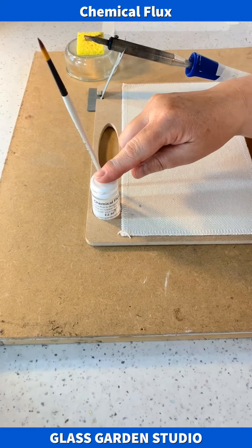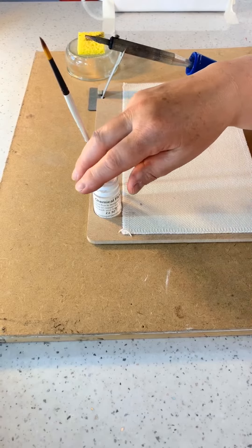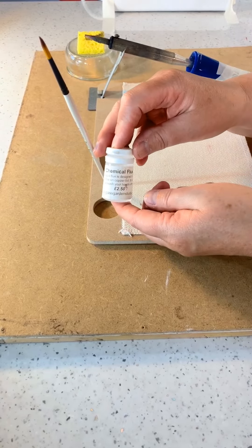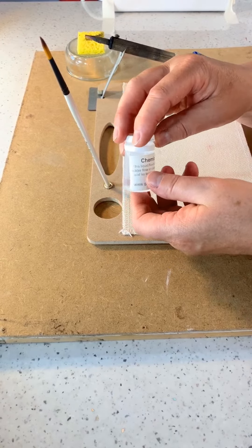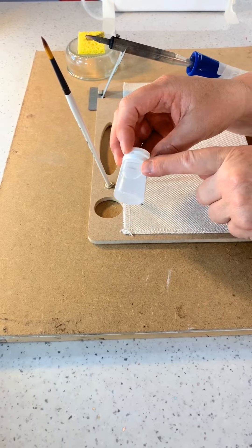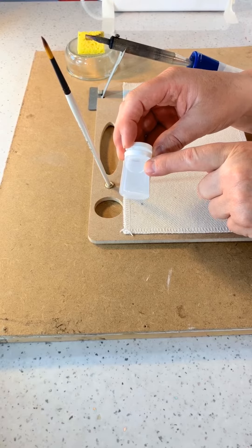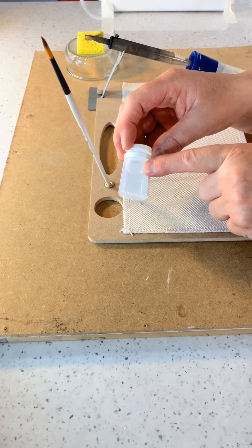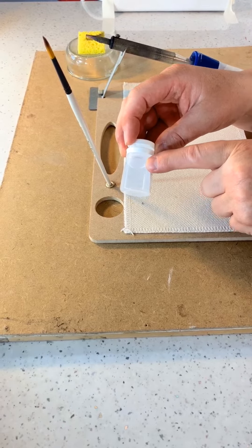So I want to talk about this element. This is our chemical flux. It's actually zinc chloride, but it's been very diluted. Zinc chloride is actually designated as an acid, but as you can see here, it looks very much like water. I've diluted this so much, I would describe it more as an irritant rather than acid.